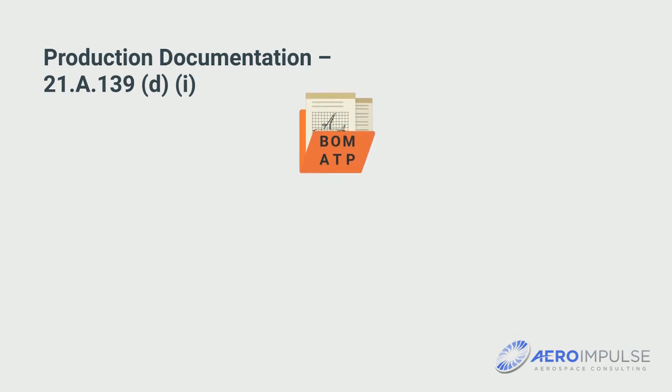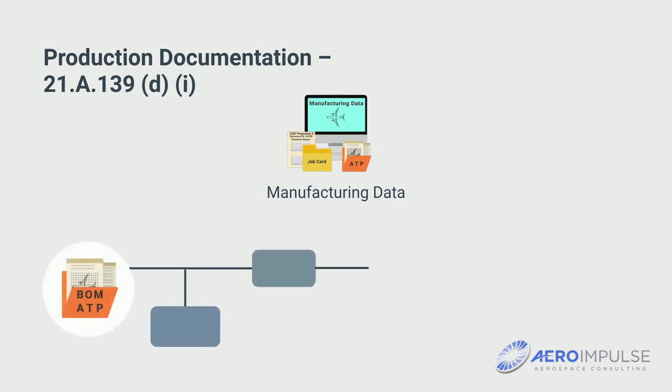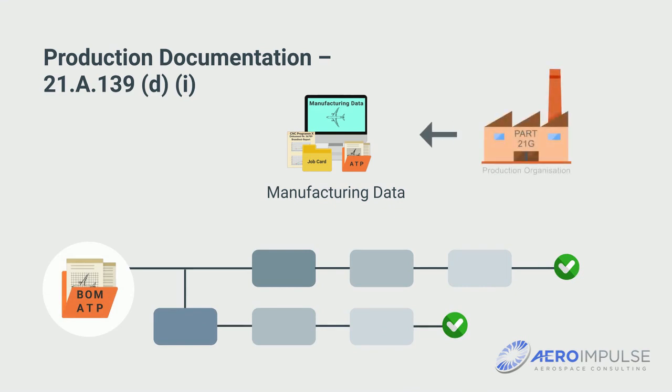On the other hand, there are manufacturing data. They describe in detail the design data to enable production. The production documents are created by the production organization in the work preparation. Possible specifications or restrictions through the design data must be noted.